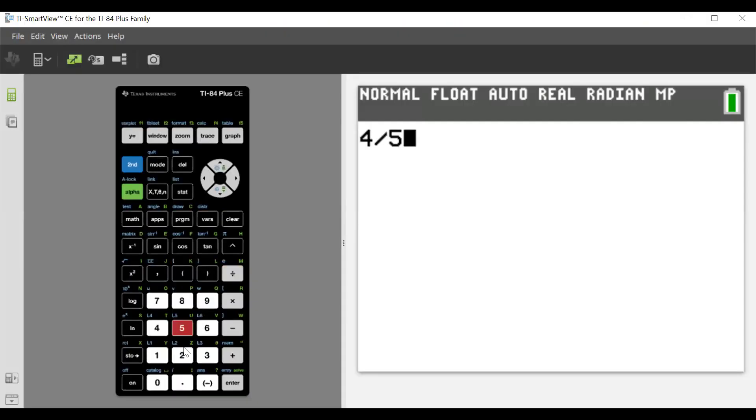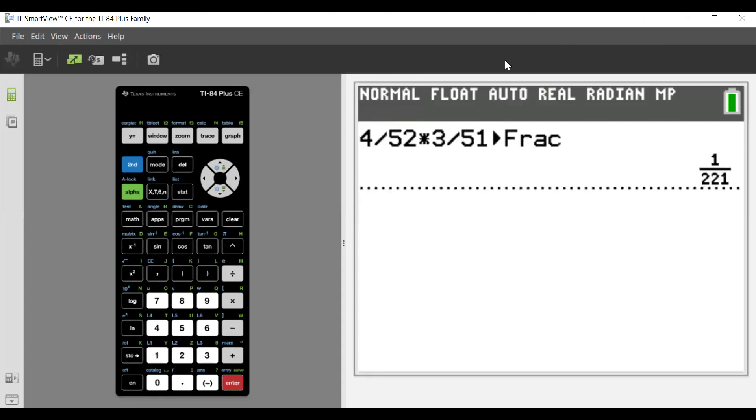Let's go to the calculator. So we have 4 divided by 52 times 3 divided by 51. Let's see if it'll reduce for us, and it does: 1 over 221.